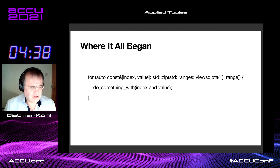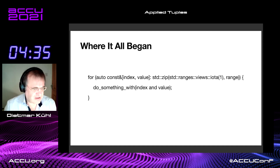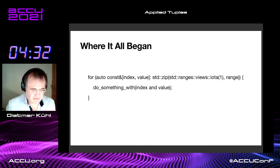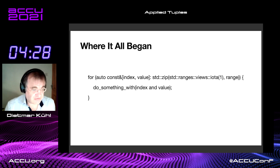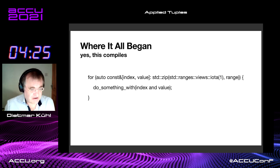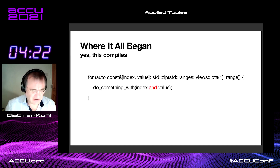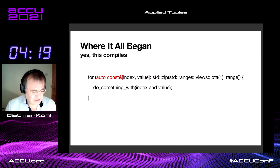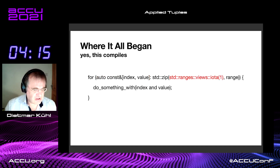So where it all began. We wanted to write this funky piece of code. We basically have two ranges, we want to iterate over them. We have one range and we want an index of that. It doesn't seem to be too complicated. This is all legal C++ — that's just syntax. If you haven't done structured bindings, giving names to pieces is great.